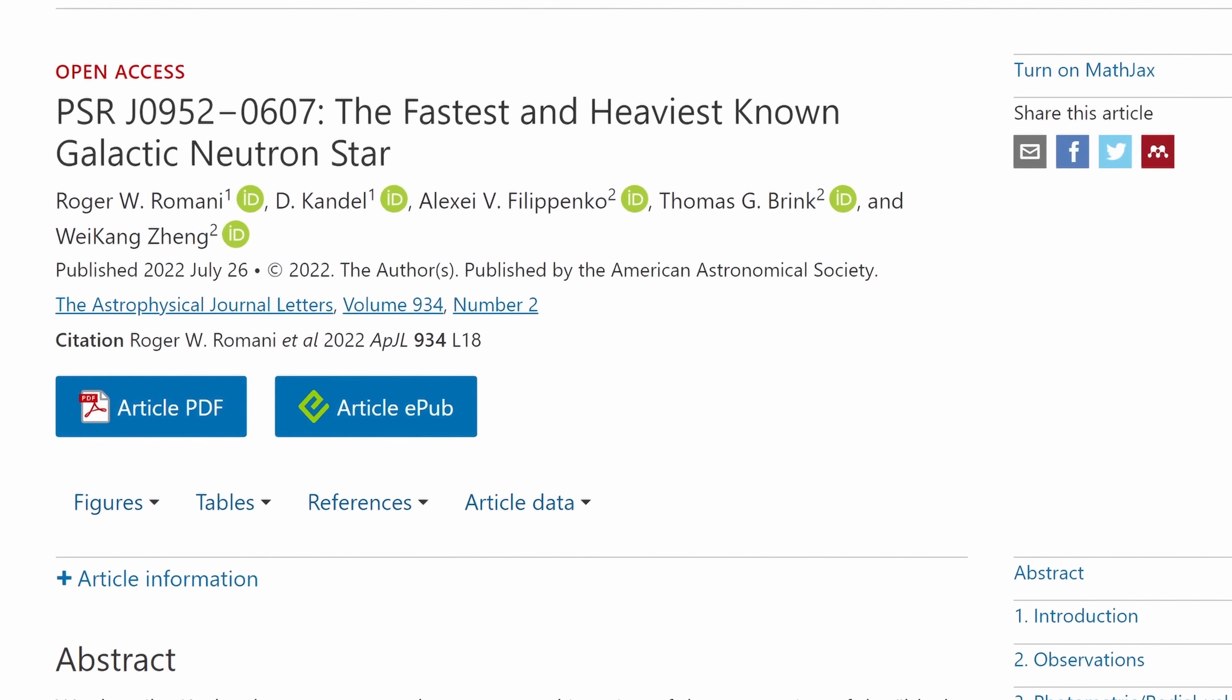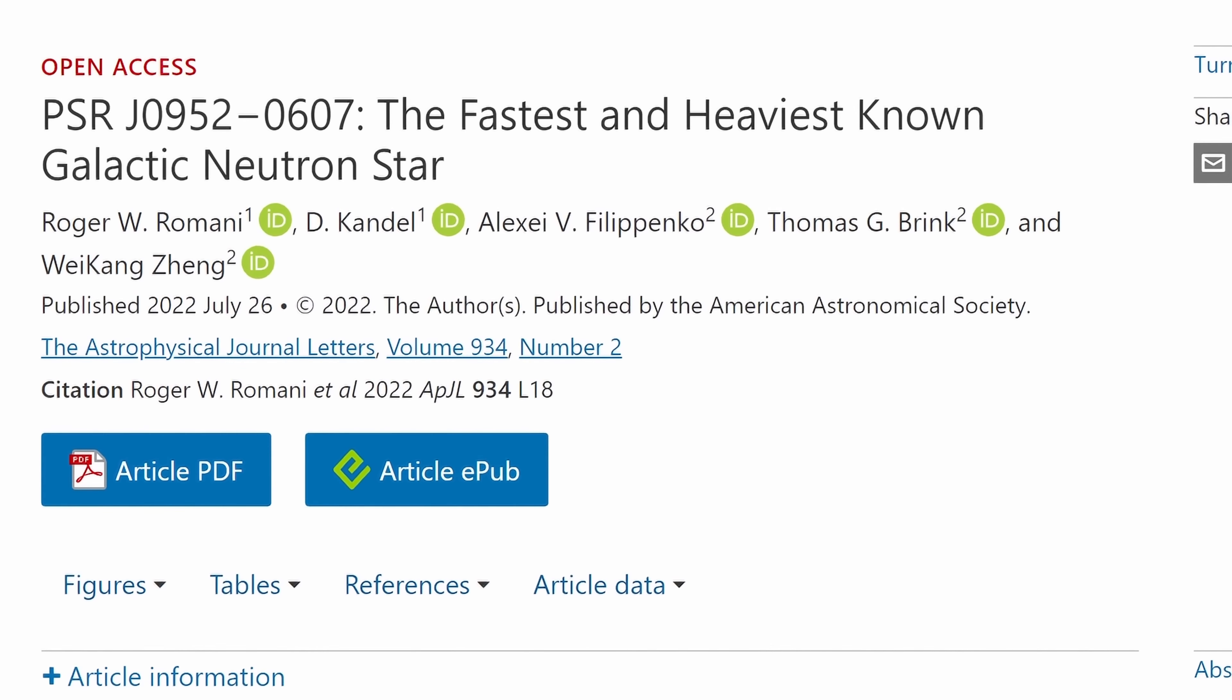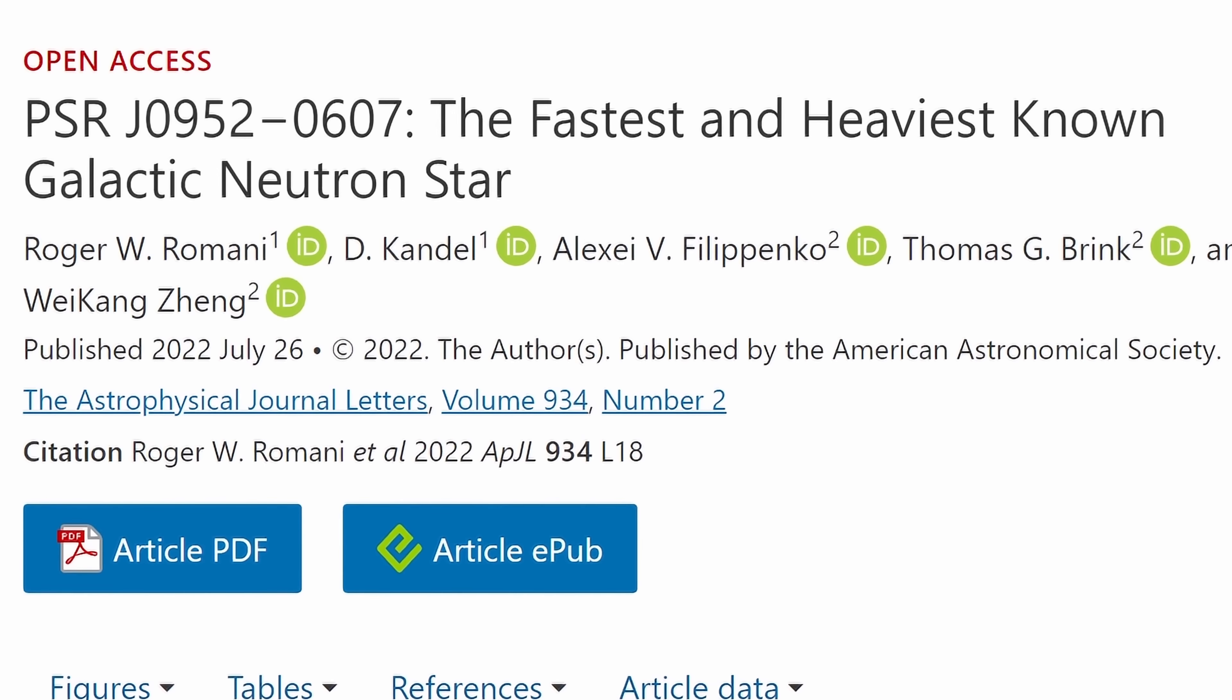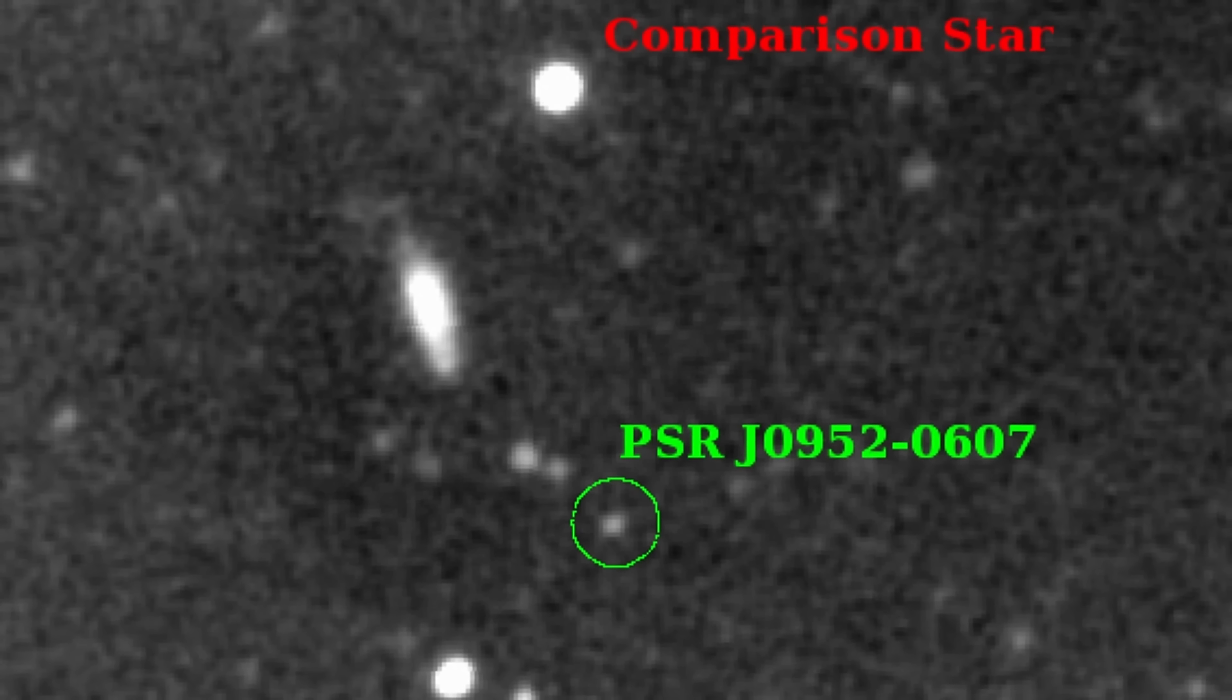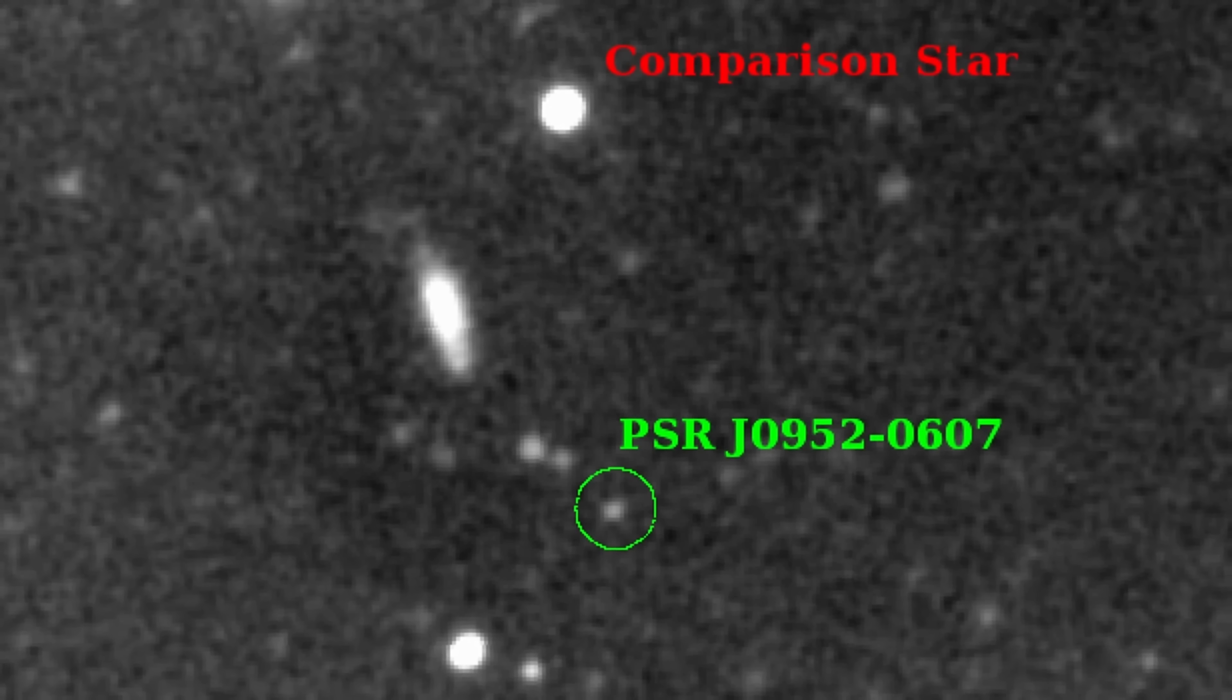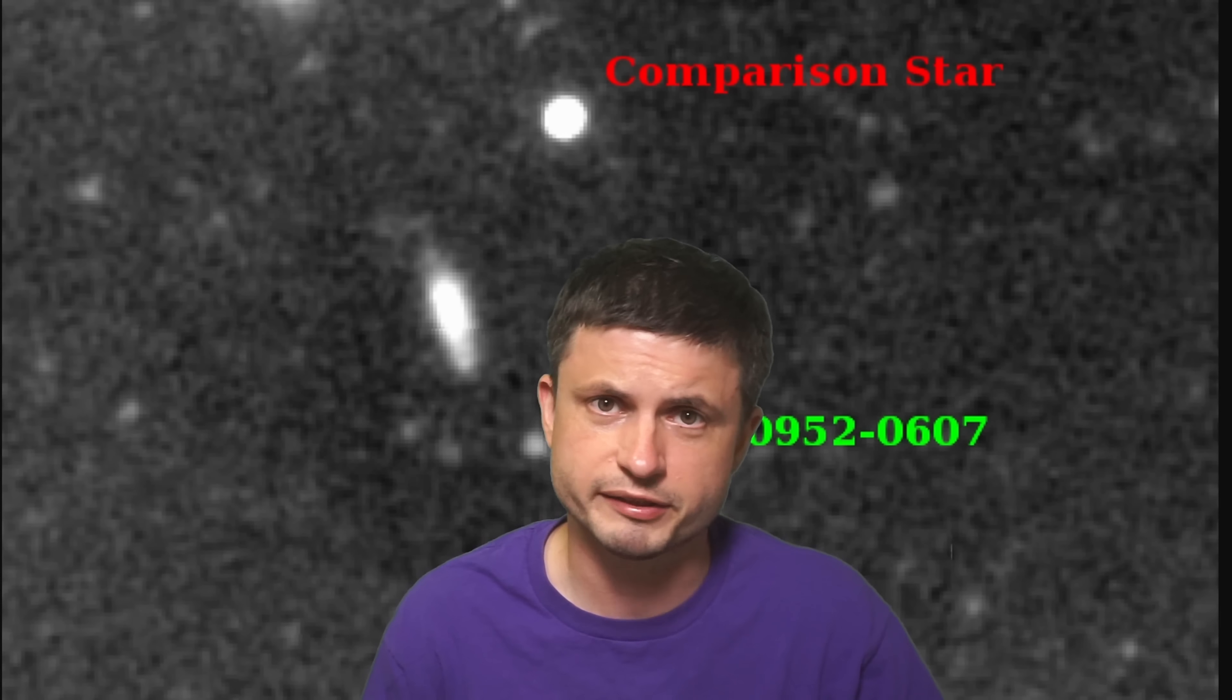So all this is from the study you can find in the description that essentially describes the object known as PSR-J0952-0607, the fastest and heaviest known neutron star. This object is located in the Milky Way galaxy, but it seems to be a record holder for a lot of different things. First of all, it's about 2.35 times the mass of the sun, making this object ridiculously massive compared to a lot of other neutron stars we've seen so far.